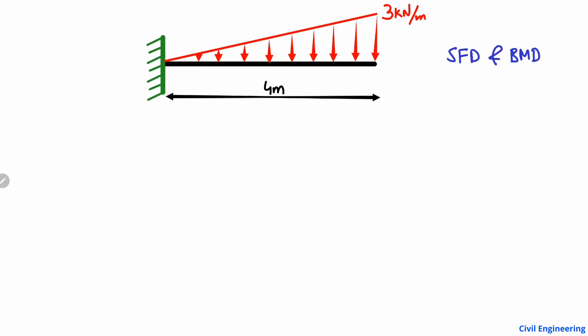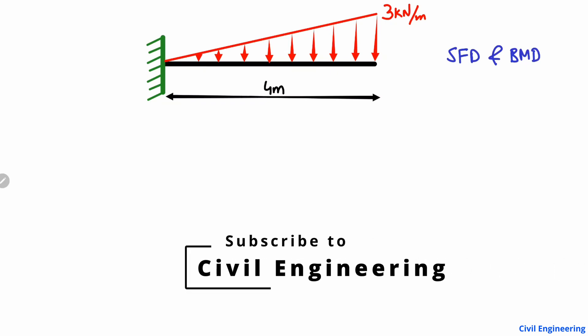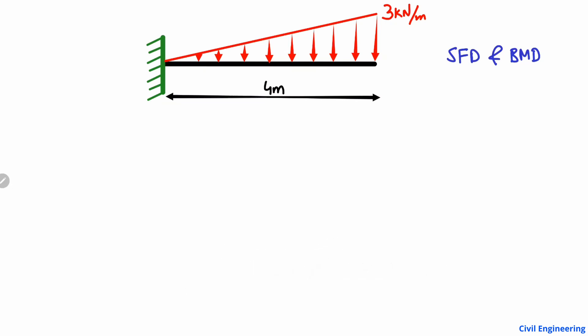We are analyzing this beam with triangular loading, also called a uniformly varying load. The load increases from 0 kilonewton per meter here and increases linearly to 3 kilonewton per meter. It is a triangular load acting on this cantilever beam, which has only one support — a fixed support, which I'll call point A.